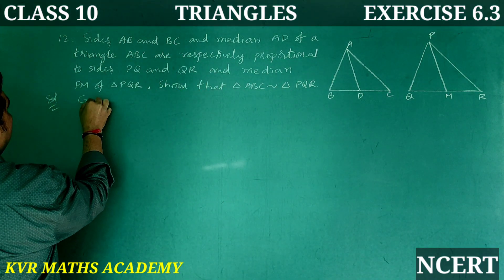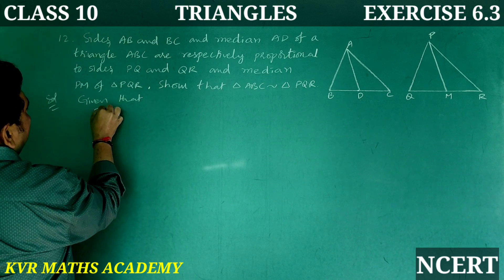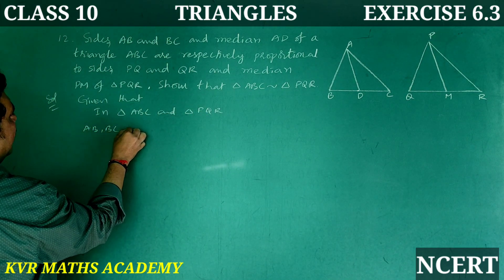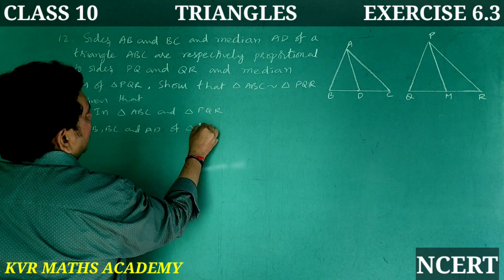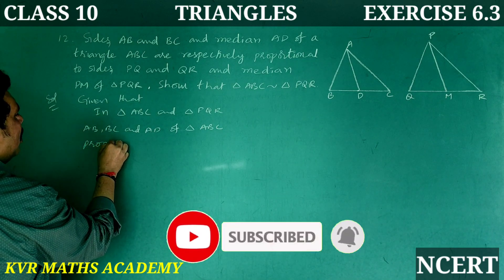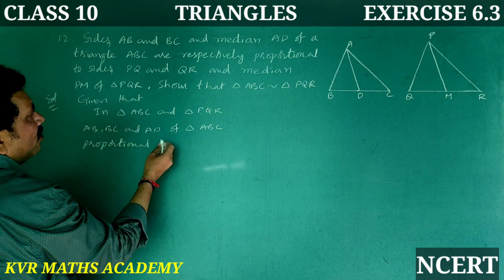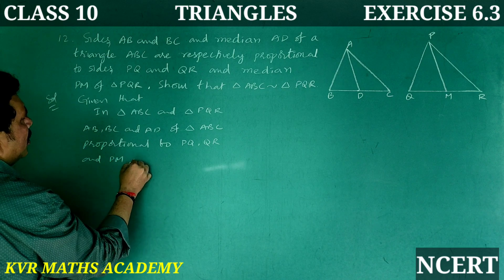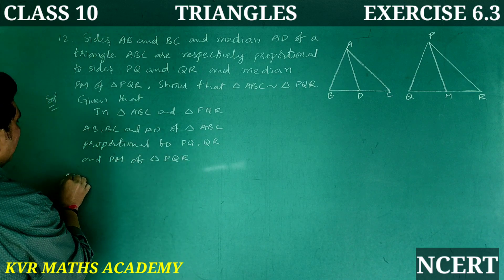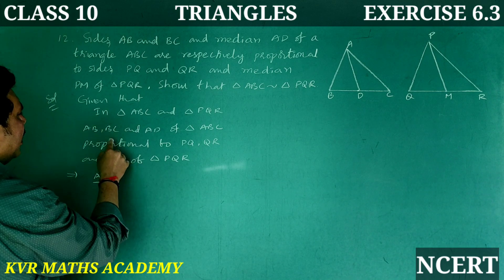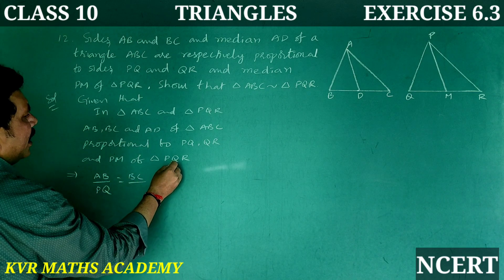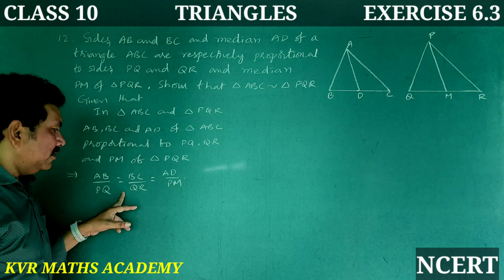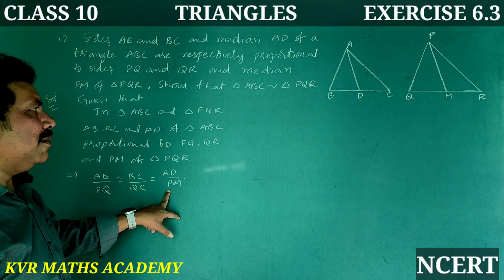Solution. Given: In triangles ABC and PQR, sides AB, BC and median AD of triangle ABC are proportional to PQ, QR and PM of triangle PQR. That is, AB by PQ is equal to BC by QR is equal to AD by PM.